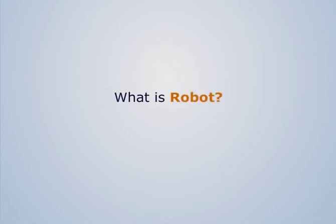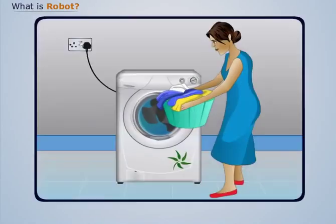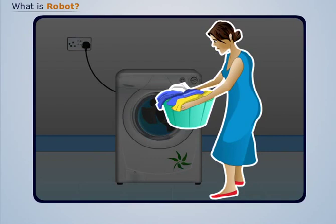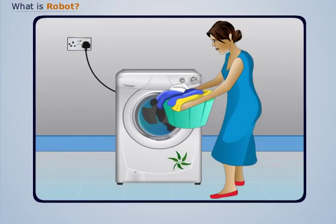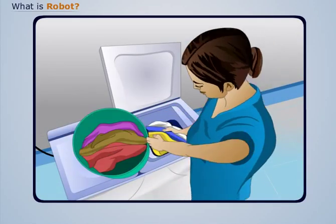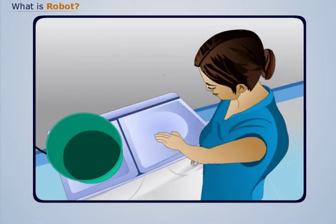What is robot? Consider a woman who needs to wash clothes. In order to do this, she uses a washing machine. She puts the dirty clothes into the machine and starts it.